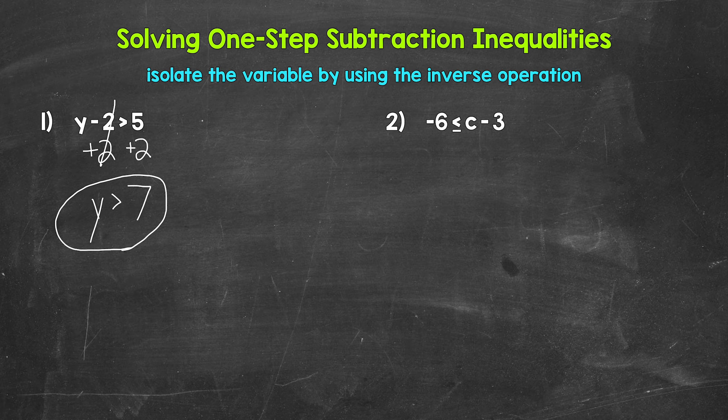So any value greater than seven is a solution of this inequality. It makes it true. And let's check a solution to make sure we are correct here. We can't check every value greater than seven. That would be impossible. We have an infinite amount of possibilities as far as solutions, values that make this inequality true.